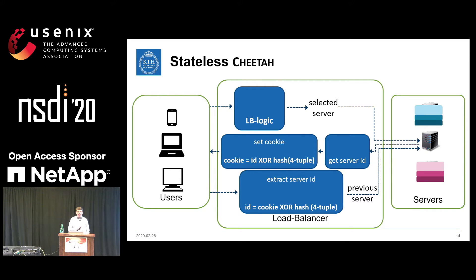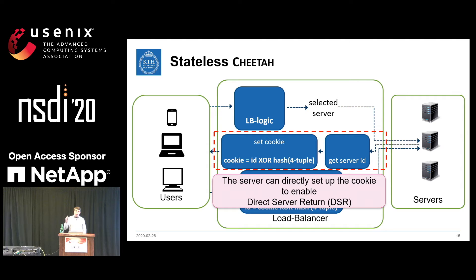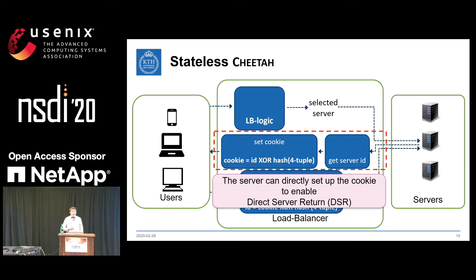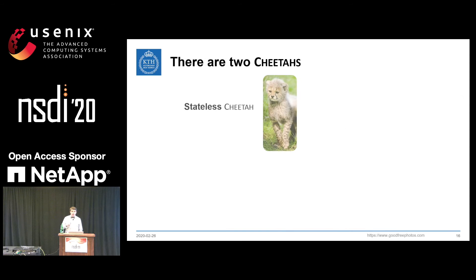This scheme works without modifying clients and without modifying servers. However, we may want to modify servers to enable cookie fixing directly on the server, which allows packets not to go through the load balancer on return — a feature called Direct Server Return. We do provide a modified version of the Linux kernel that allows cookie fixing to be done directly on the server.